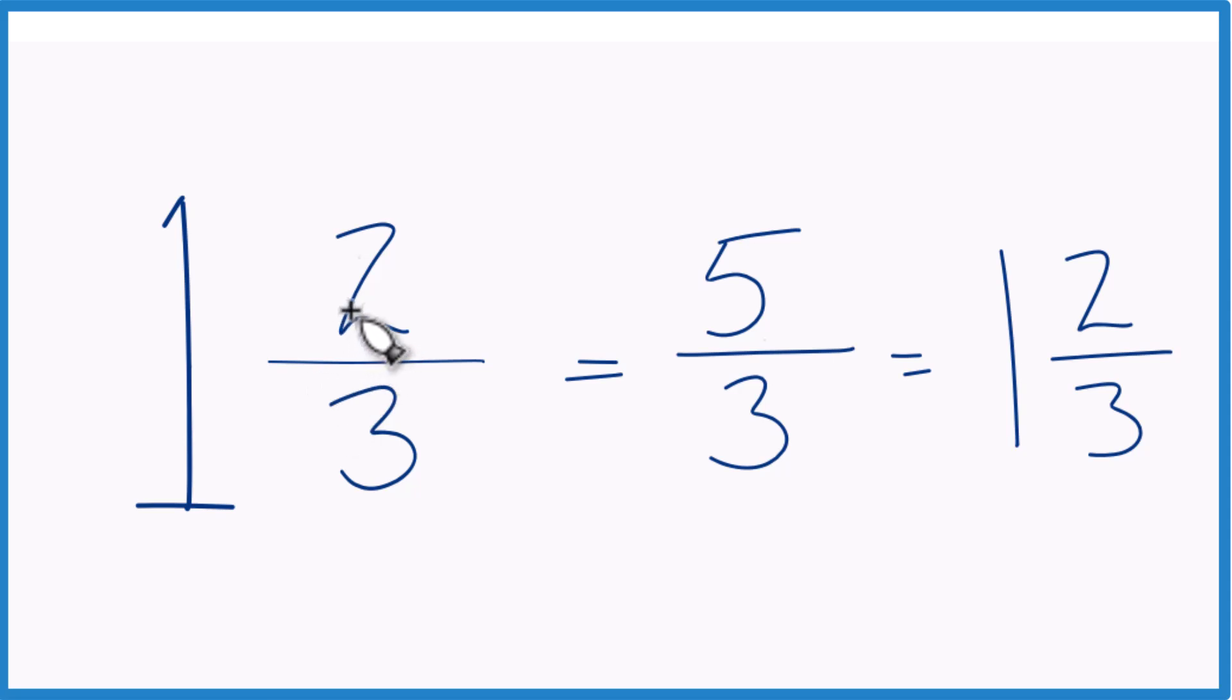So that's it. This is Dr. B converting the mixed number 1 and 2 thirds to an improper fraction. The answer, 5 thirds. Thanks for watching.